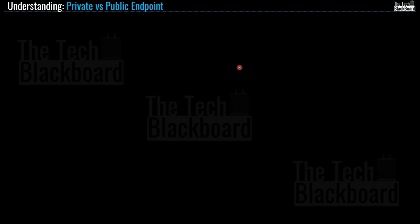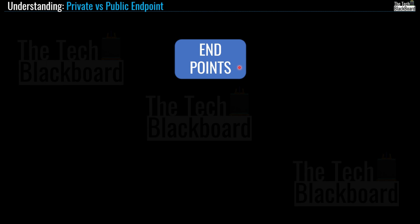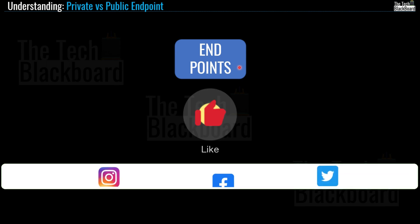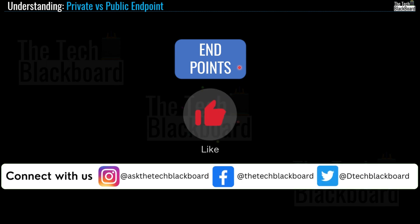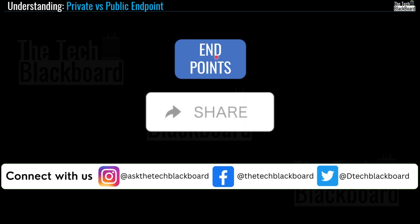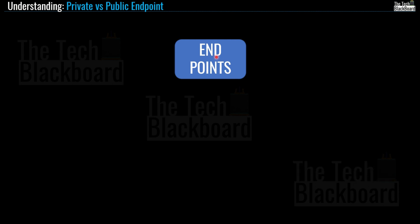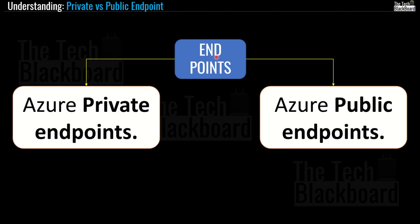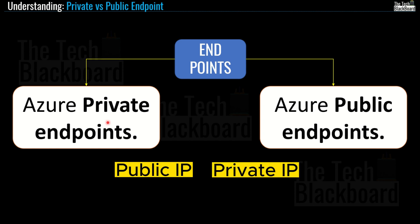Now let's take a step forward and understand the two major types of endpoints. There are two types of Azure endpoints: private endpoint and public endpoint. To better understand both types, I want to introduce you to the concepts of public IP and private IP, which we need in order to understand both endpoints properly.